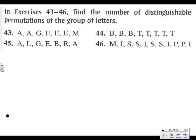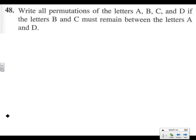Problem 48: all the permutations of the letters a, b, c, and d if the letters b and c must remain between the letters a and d. Let's think about our 4 spots. For the first spot, we can only have a or d — that's 2 options. Which means the last spot has just 1 option remaining.